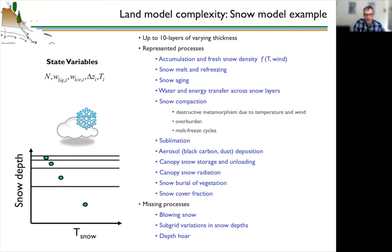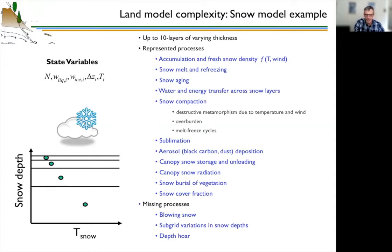Even with all these processes, the snow model is still missing things we know are important. Blowing snow is not represented, which matters especially in the Arctic with high winds. Sub-grid variation in snow depth isn't accounted for — we treat the grid cell as having a single snow depth. Depth hoar, a grainy snow that forms at the bottom of a snowpack particularly in the Arctic, is also missing and has a significant impact on soil temperatures in that region.